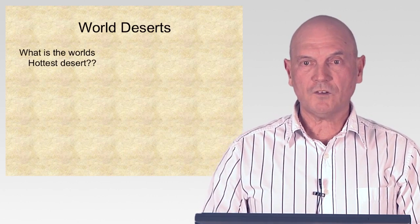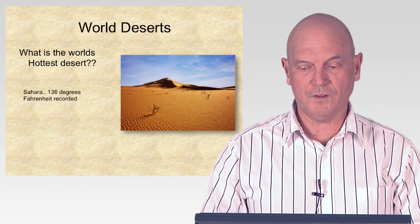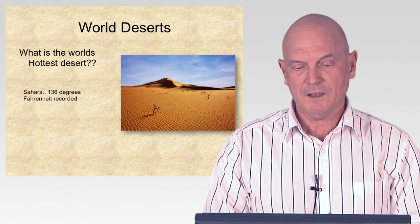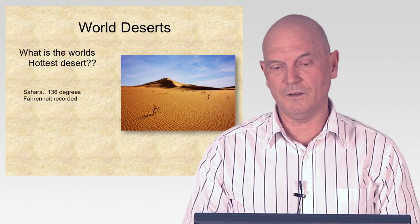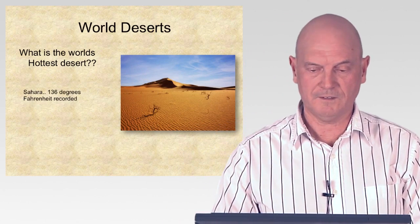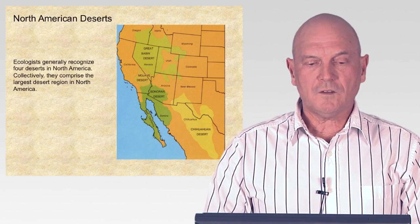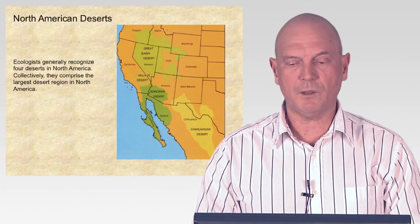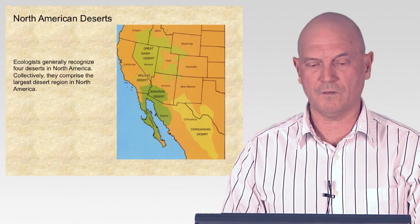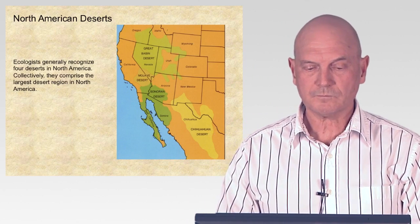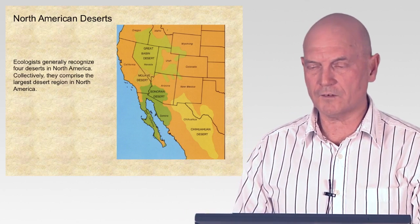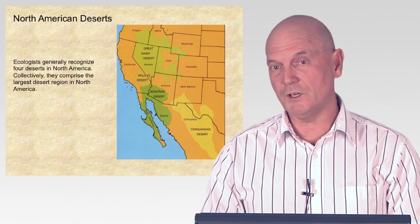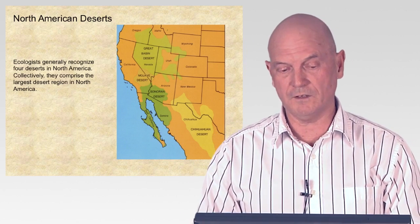The world's hottest desert is probably the Sahara again, though there's some controversy — 136 degrees Fahrenheit has been recorded there. Now, the North American deserts: ecologists generally recognize four deserts in North America, which collectively comprise the largest desert regions on the continent.